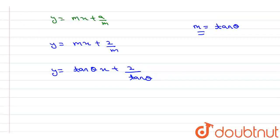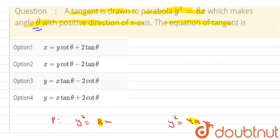So from here we can say that y equal to tan theta x plus 2 cot theta. So from the options we can say that option number 4 is correct. Thank you.